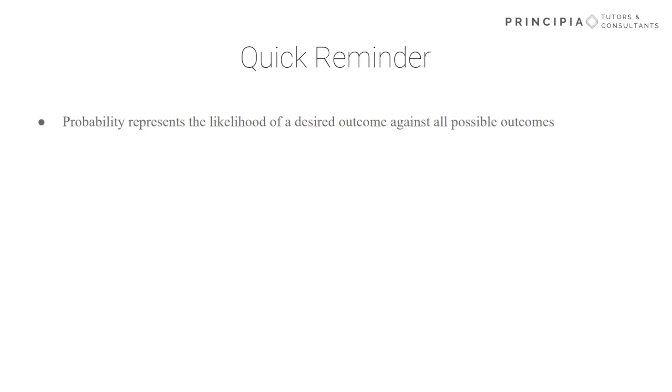Quick reminder for y'all, probability is the likelihood of an event occurring out of all possible events, and so you take your desired outcome divided by the total number of outcomes to get the probability.